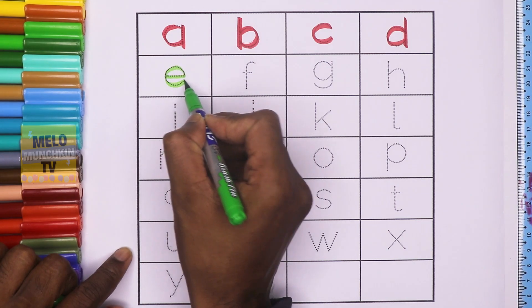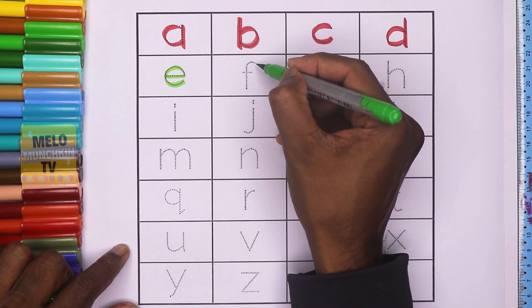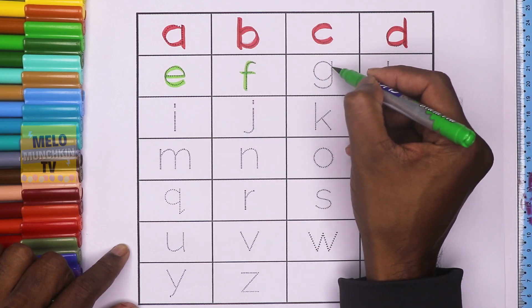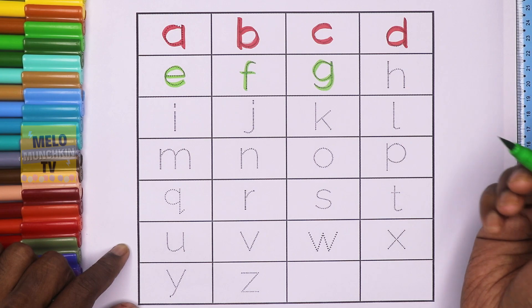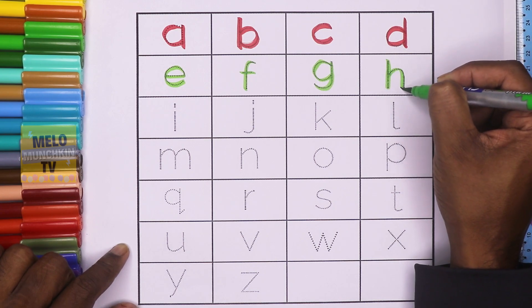E, e for elephant. F, f for fan. G, g for grapes. H, h for house.